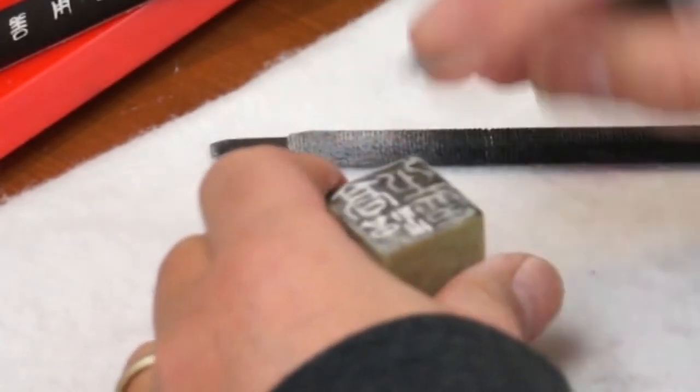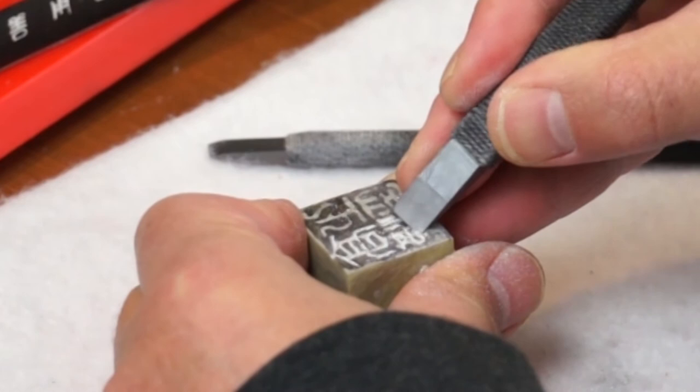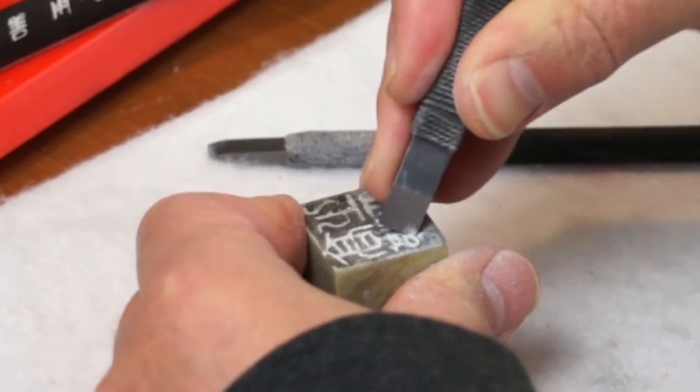We try to reproduce the ancient bronze seal kind of style with the edge effect. So some chipping, some breaking. It's part of the design.